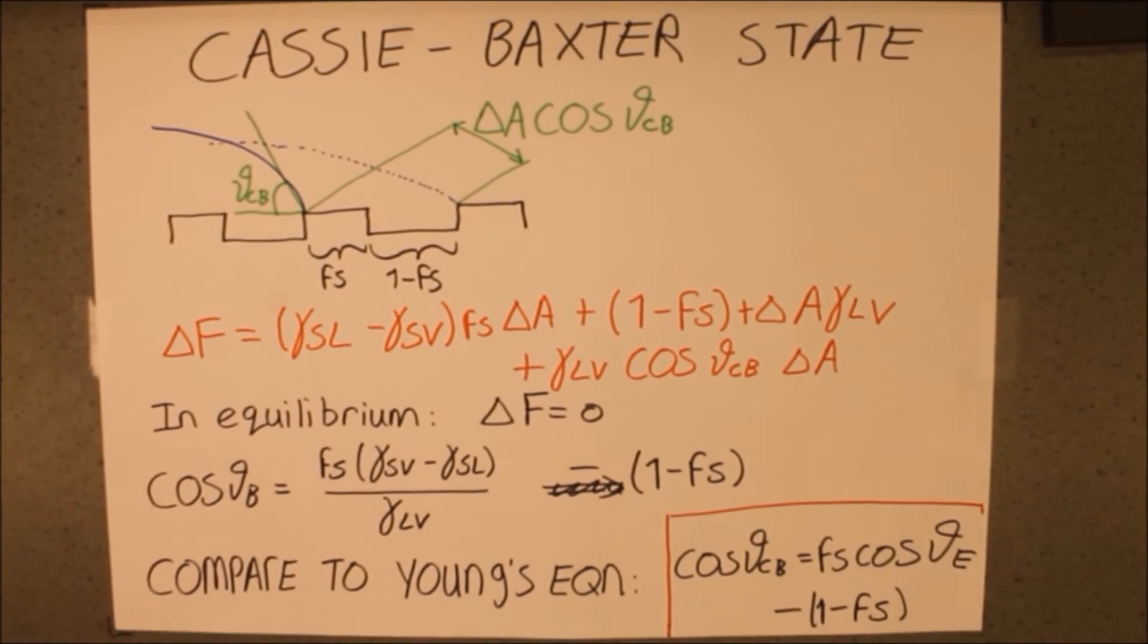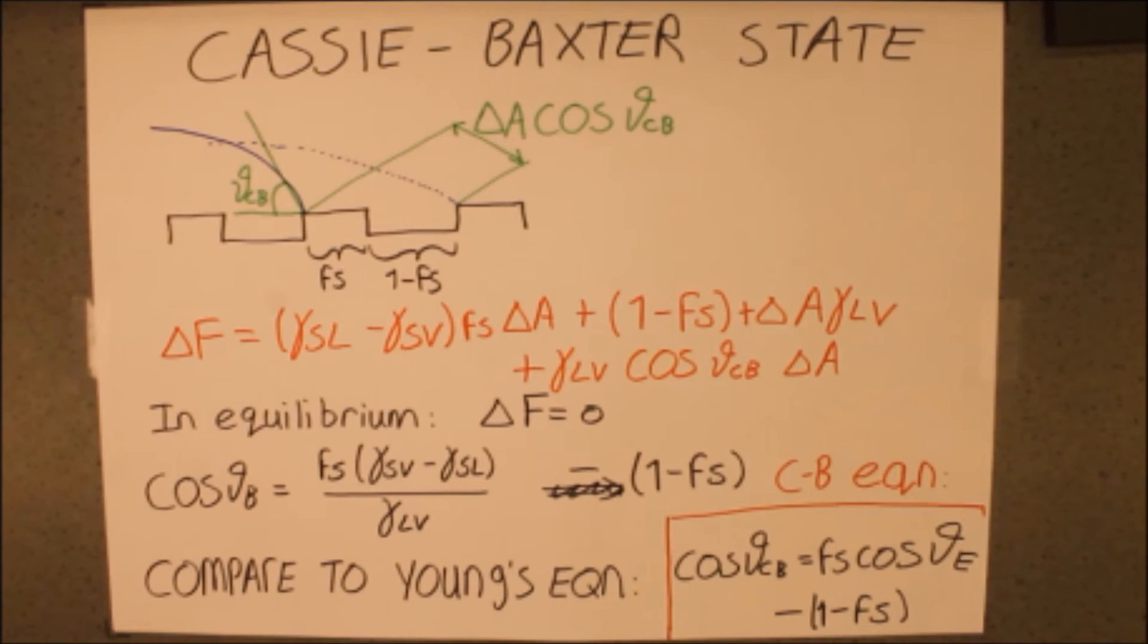This tells us how the size of the roughness peaks affects the equilibrium angle. Again, we find that for angles bigger than 90 degrees, the equilibrium angle gets larger.